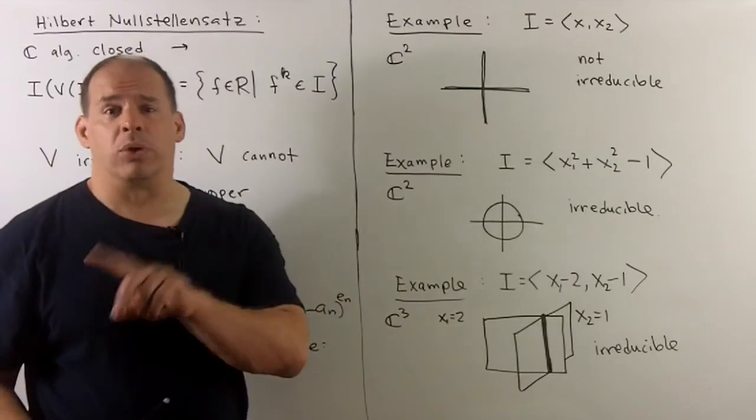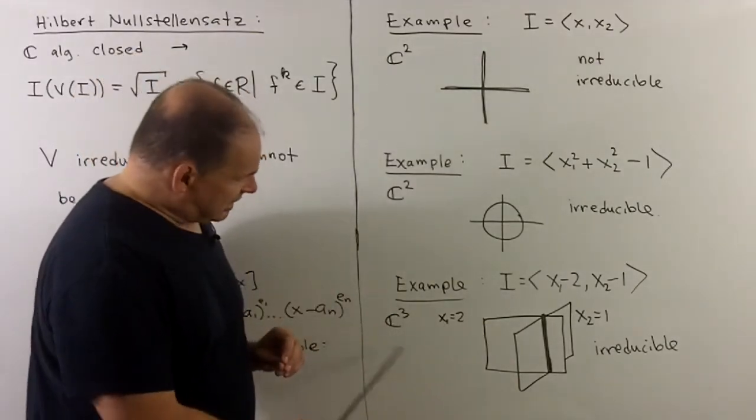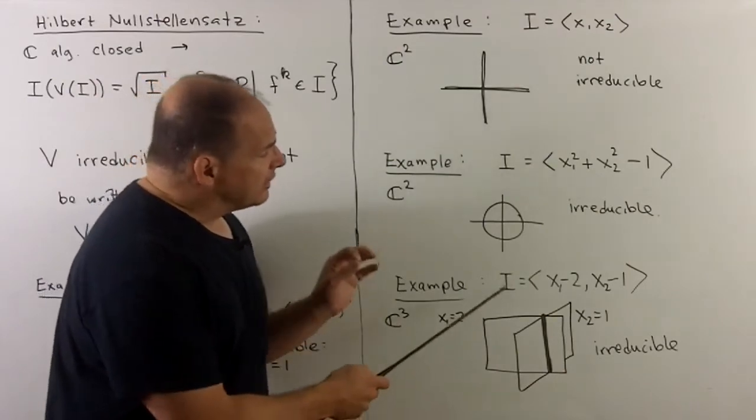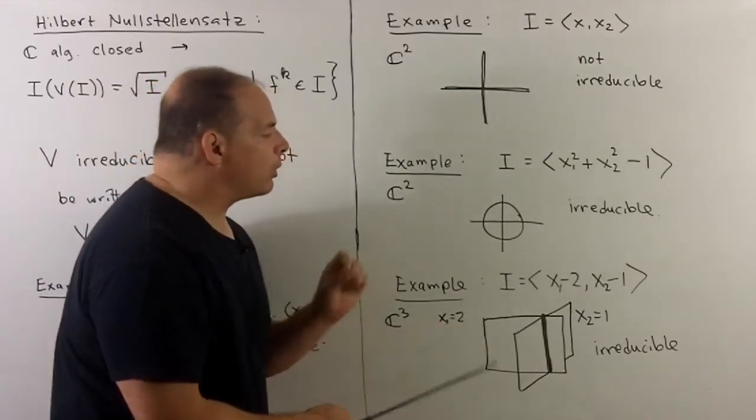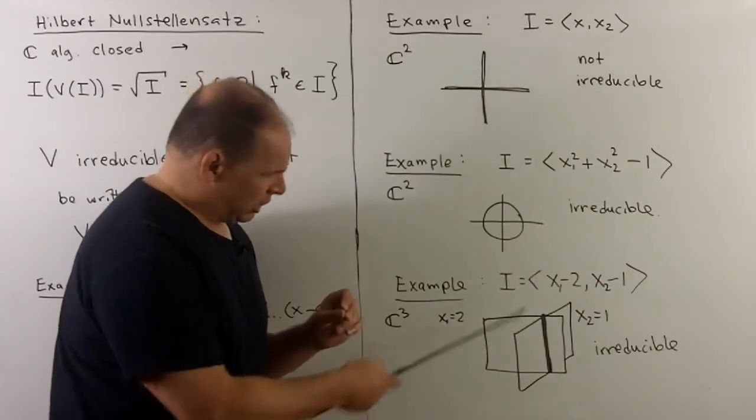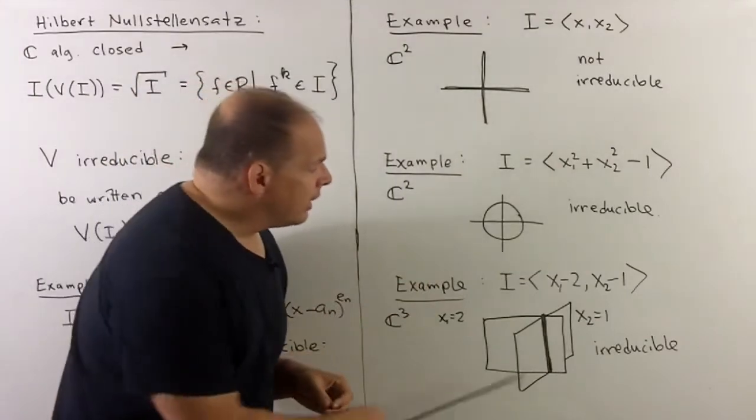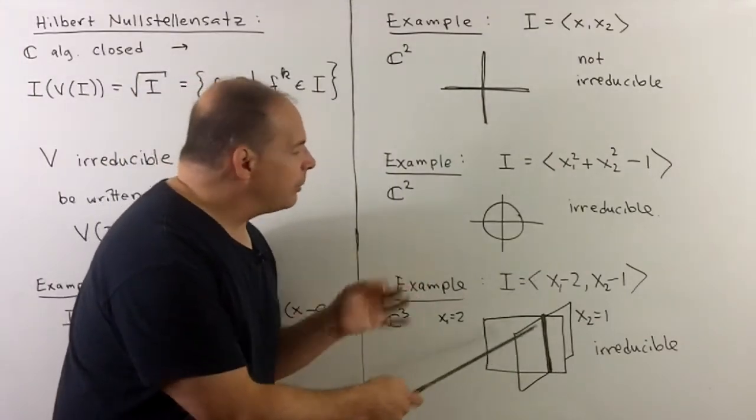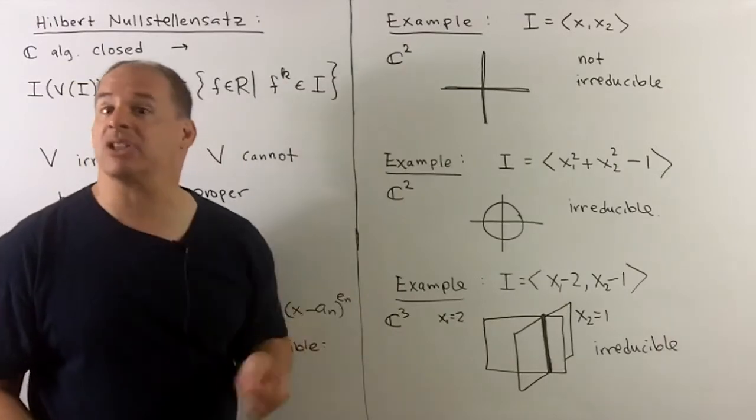For an example where there's a proper intersection happening, we're in C3. I'll take the ideal generated by X1 minus two, X2 minus one, and then all we're doing here is taking the intersection of two planes parallel to the coordinate planes, and that's just going to give us, in the real picture, a line, in the complex picture, it's going to be a complex line or a plane.